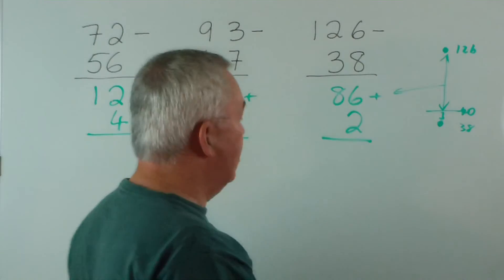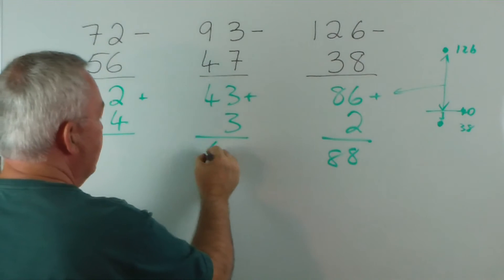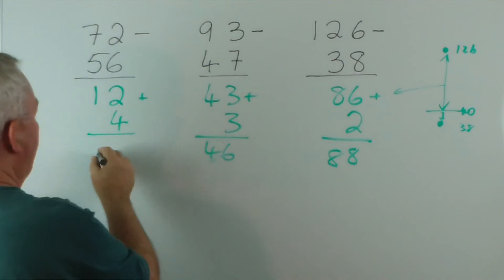So we're actually adding two gaps. It's quite a good method. 43 plus 3 is, oh sorry, 46, and 12 plus 4 is 16.